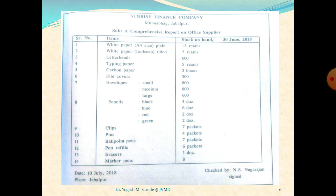After the main body, the next point is date. Write the date in the exact bottom-left corner of the page — for example, 10th July 2018. Just below the date, mention the place, meaning from where you are writing the report. Just in front of the date and place, on the right side at the bottom of the page, write the name of the reporting officer — the person writing the report — and sign on it. This is what makes your inventory report writing complete.